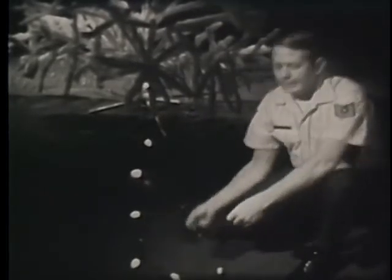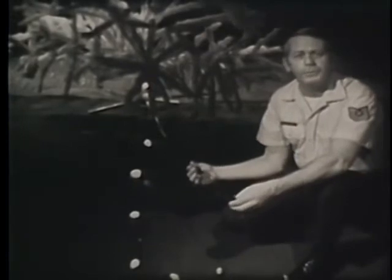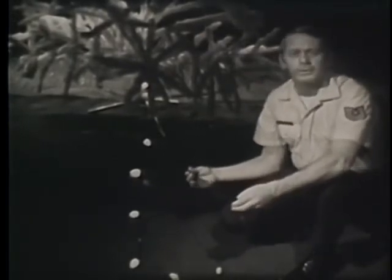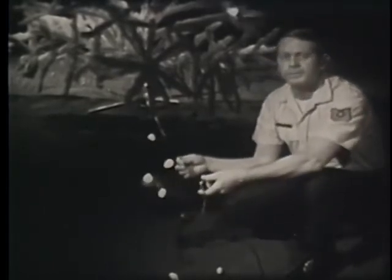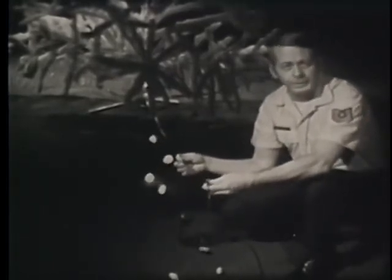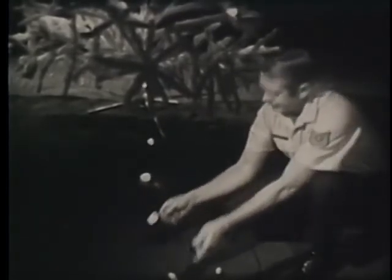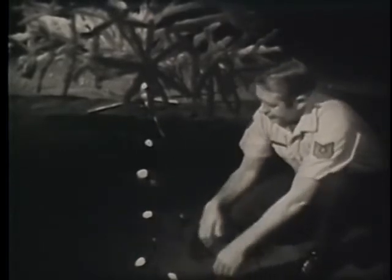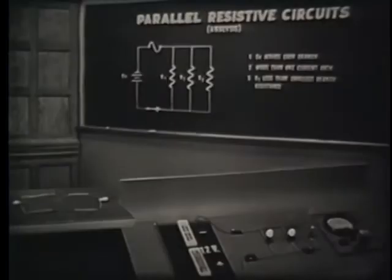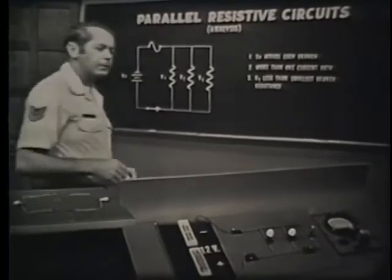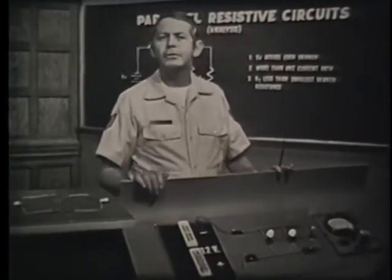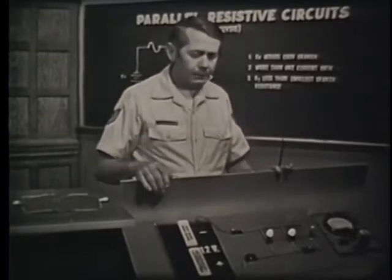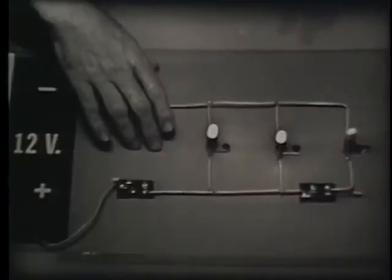In this series circuit, it's obvious that removing any component stops all current, but it isn't so obvious in this parallel circuit why it remains lit. The circuit on this trainer is a parallel circuit similar to the parallel string of Christmas tree lights. By using it, we should be able to figure out why the bulbs remain lit.